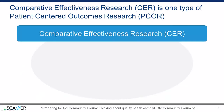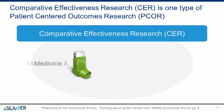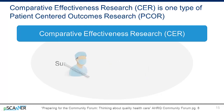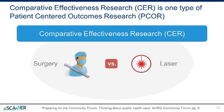This type of comparison of options is called comparative effectiveness research. Comparative effectiveness research, or CER, looks at treatments that are already available to see which might be better for certain types of patients. For example, comparing two different asthma medicines to see which one helps patients breathe more easily, or comparing whether surgery or laser treatments work better to treat a rare form of cancer.